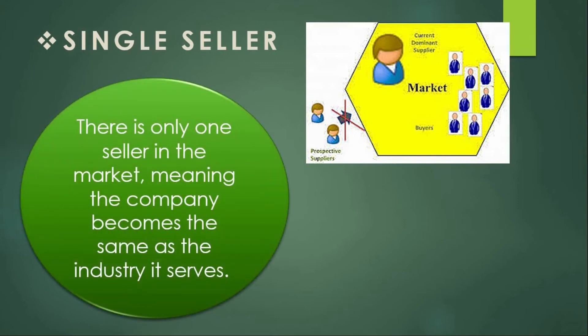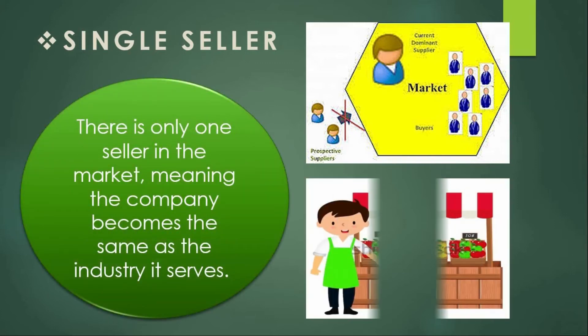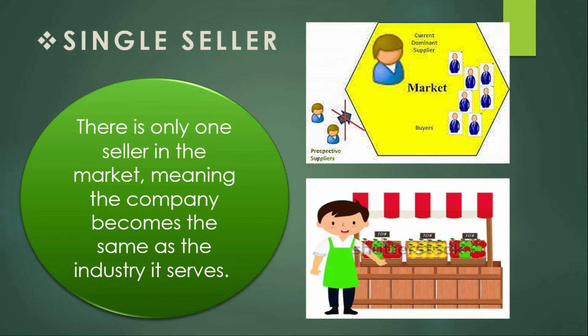The second feature is the single seller situation. In a monopoly, there is only one seller in the market, meaning the company becomes the same as the industry.